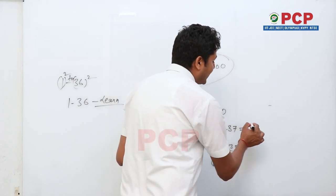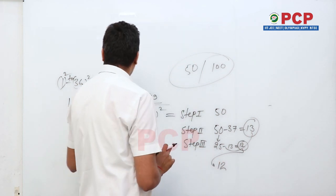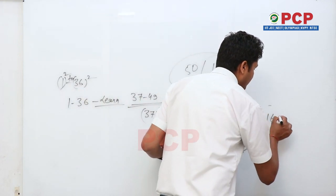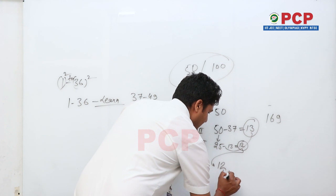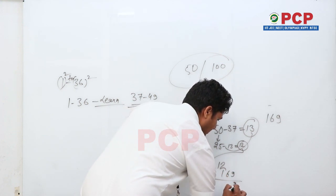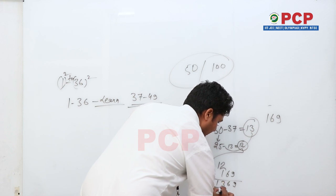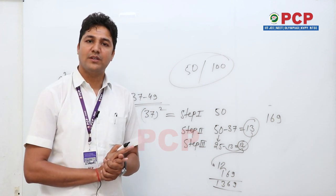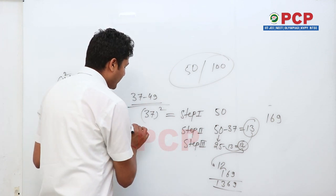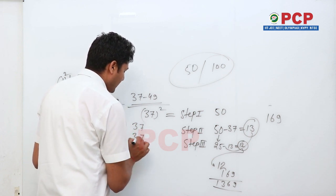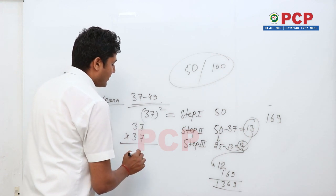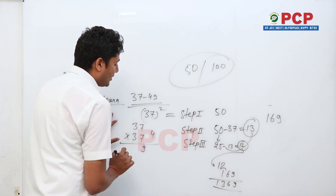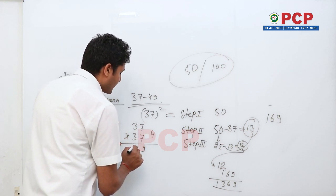Now find the square of 13. Since we have learned squares from 1 to 36, 13² = 169. Note that down. So combining: the first part is 12 and 13² = 169, giving a final answer of 1369. Just imagine how quickly that was done!